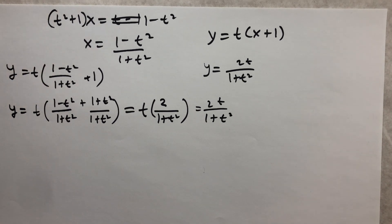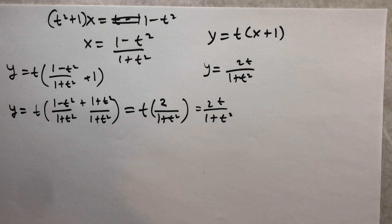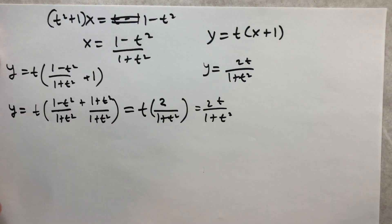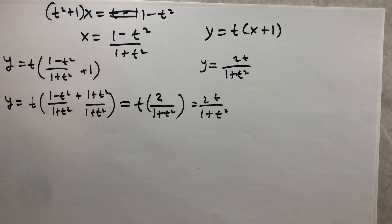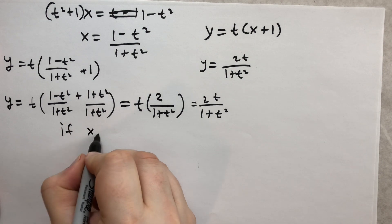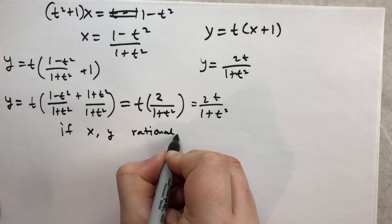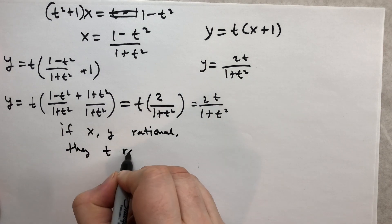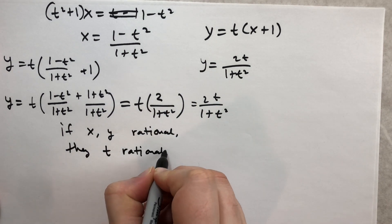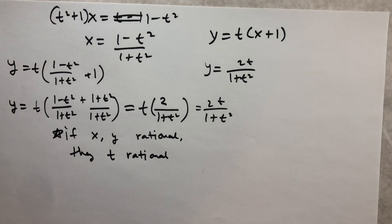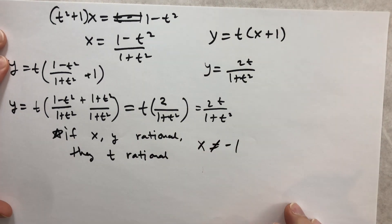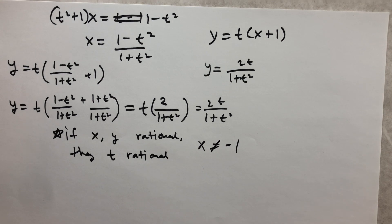In theorem one, suppose X and Y are rational numbers. Then T = Y/(X + 1) is also rational, since it's a quotient of rationals. So if X and Y are rational, then T is rational. Remember X cannot equal −1 because we'd be dividing by zero. We have now completely described all rational points on the unit circle, or equivalently all right triangles with integral sides.